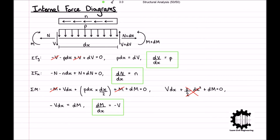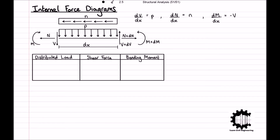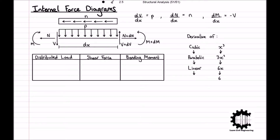We can summarise this conveniently in a table, but first let's quickly revisit simple differentiation. Considering a cubic function x³, its derivative is 3x² — so the derivative of a cubic function is parabolic. The derivative of 3x² is 6x — so the derivative of a parabola is linear. The derivative of 6x is 6 — so the derivative of a linear function is a constant. And the derivative of a constant is zero.